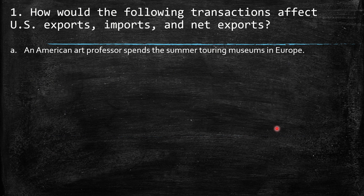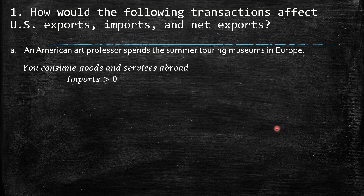The first question asks how the following transactions would affect US exports, imports, and net exports. A: An American art professor spends the summer touring museums in Europe. This person is consuming goods and services abroad, so we consider that an import from the US side. This is an increase in imports, so assuming everything else remains the same, we have net exports lower than zero.